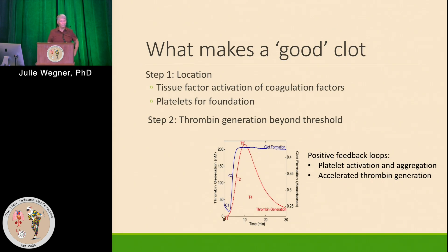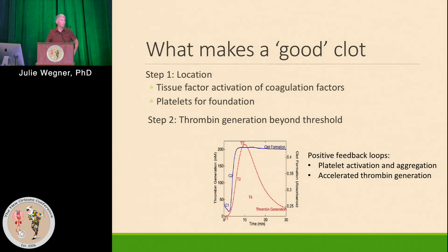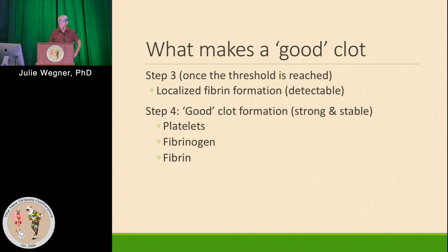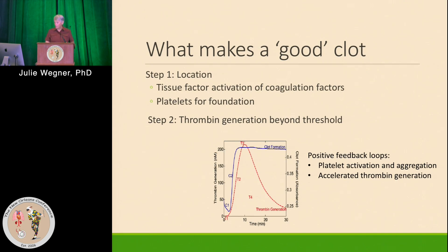The next step is you need thrombin generation. Thrombin generation needs to get beyond a certain threshold for a clot to actually start to be formed. This graphic shows the red one is thrombin generation in a test tube, and the blue one is the actual clot formation. Once you reach a certain threshold of thrombin generation, the clot can start to form. You then get platelet feedback activation, which is required to get good clot formation and accelerated thrombin generation.